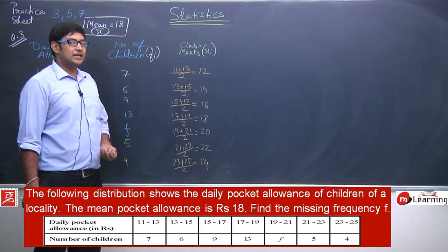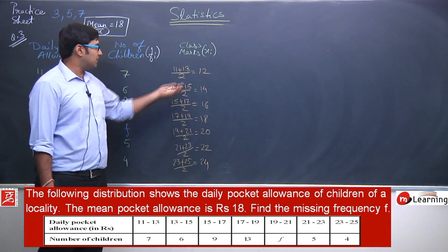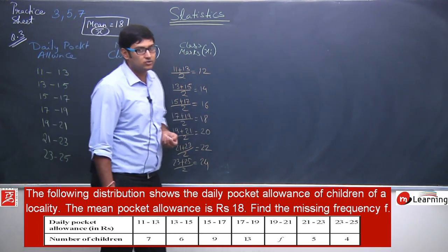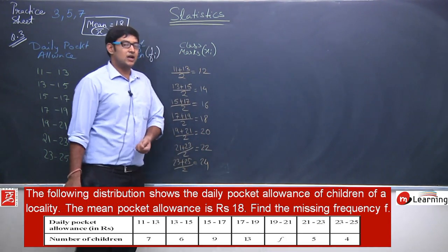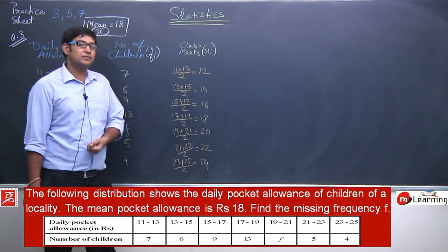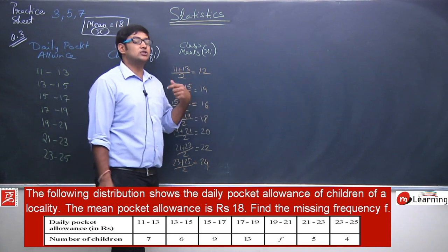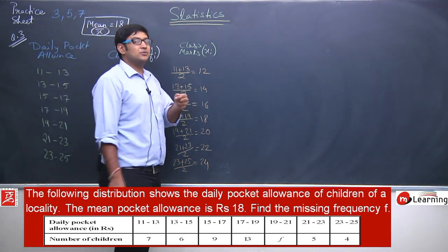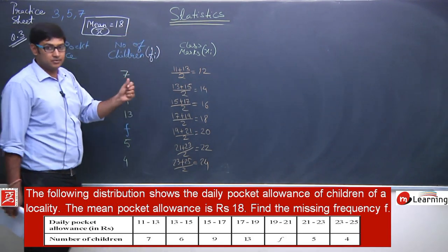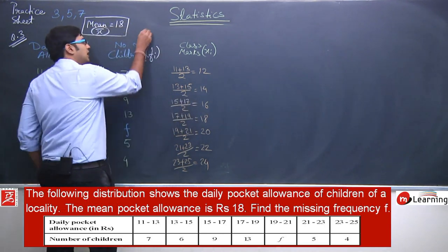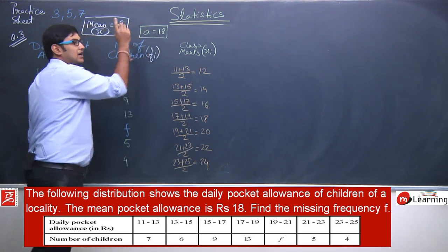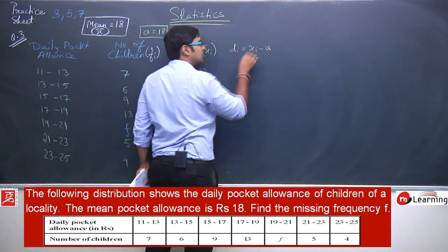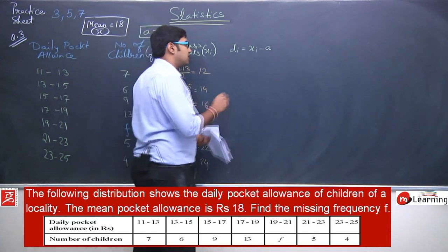To reduce calculation, let us apply the assumed mean method. Notice the mean of this data is given as 18, so let us take assumed mean a = 18. We calculate deviation d_i = x_i minus assumed mean: 12−18=−6; 14−18=−4; 16−18=−2; 18−18=0; 20−18=2; 22−18=4; 24−18=6.